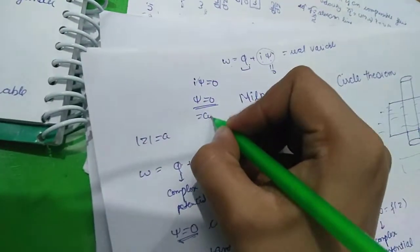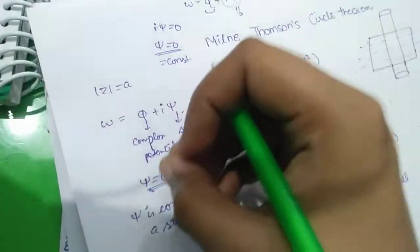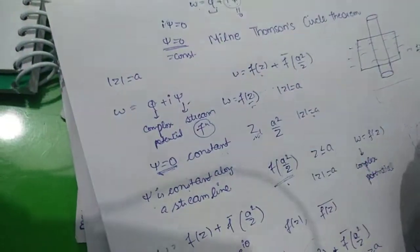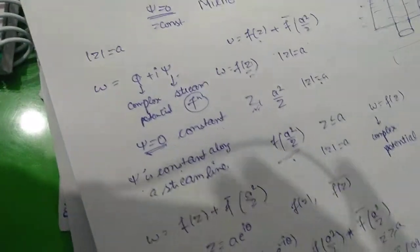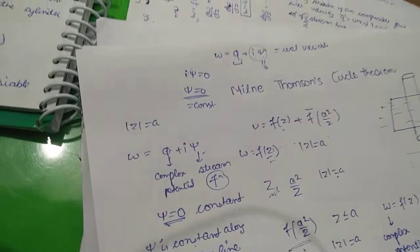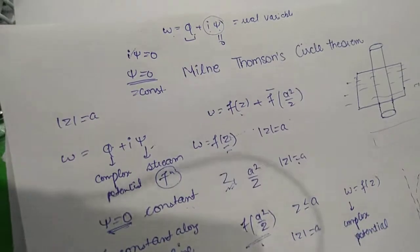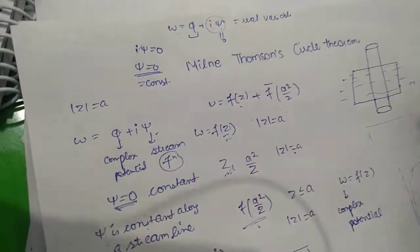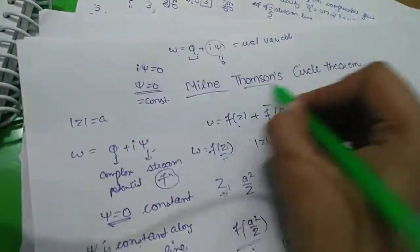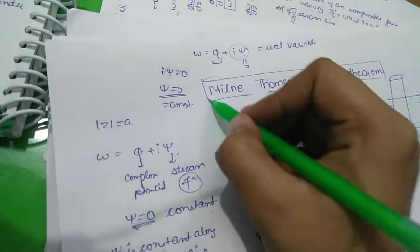ψ = 0, which is a constant. Since ψ is always constant along a streamline, and a streamline is a rigid boundary, we have proved that the circular cylinder mod z = a that we introduced is a rigid boundary. This was the Milne Thomson Circle Theorem, and this completes the proof.